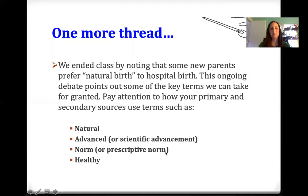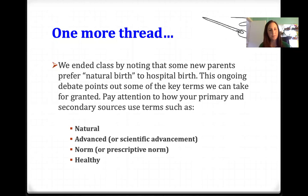We ended class last time by noting that some new parents prefer natural birth to hospital birth. This ongoing debate points out some of the key terms we can take for granted. Pay attention to how primary sources use terms such as natural, advanced, norm, and healthy. There are often assumptions packed into the way people use those terms, so they're words to pay attention to as you're analyzing.